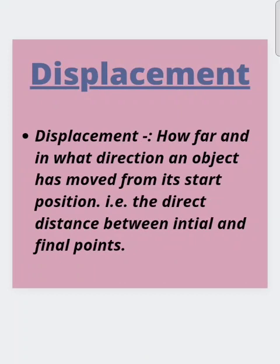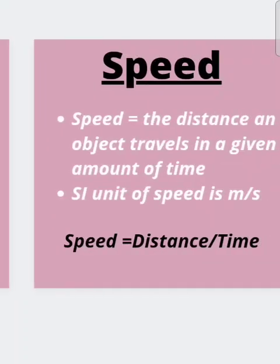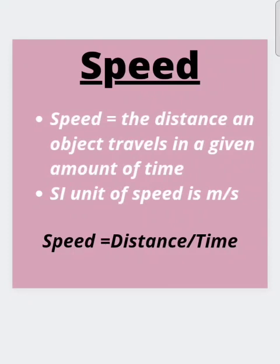Another important term is displacement. Displacement is how far and in what direction an object has moved from its start position — that is, the direct distance between the initial and final points. Speed is the distance an object travels in a given amount of time. The SI unit of speed is meter per second, and speed's formula is distance divided by time.